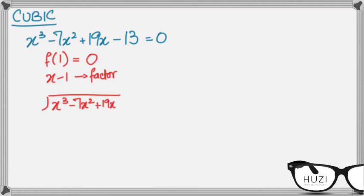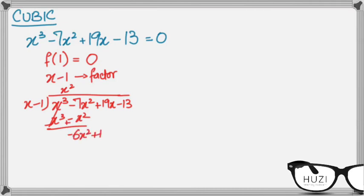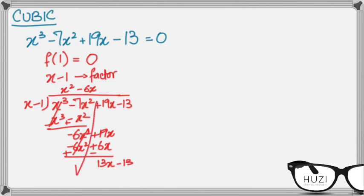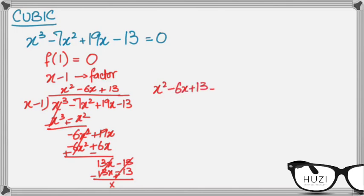Dividing the cubic by x minus 1: I get x squared as the first term, giving x cubed minus x squared. After cancelling and changing signs, I get minus 6x squared plus 19x, then minus 6x squared plus 6x. Changing signs again, I get 13x minus 13, which also cancels. So the quadratic factor is x squared minus 6x plus 13 equals 0.